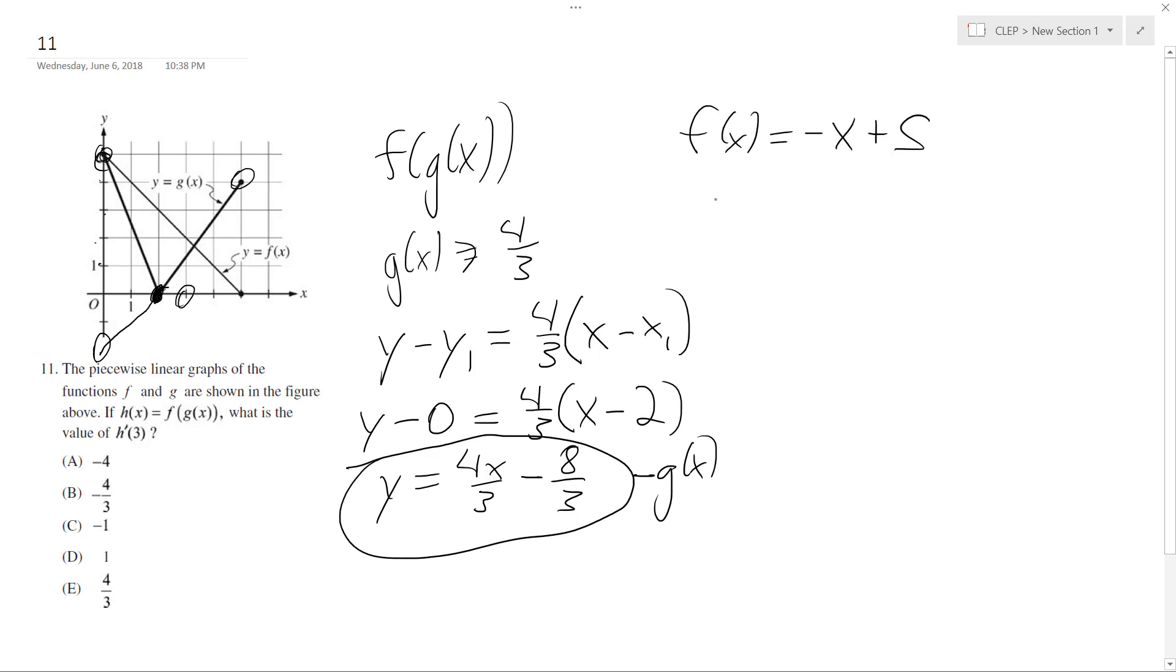So all we have to do for f of g of x is plug in this equation for x, so negative quantity 4 over 3 x minus 8 over 3, and then plus 5.